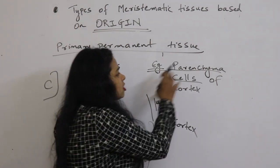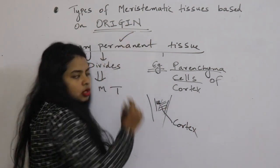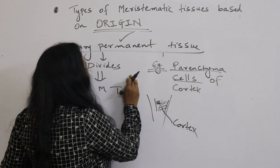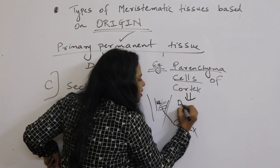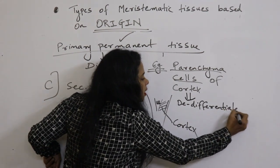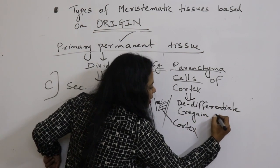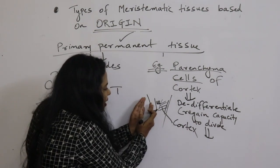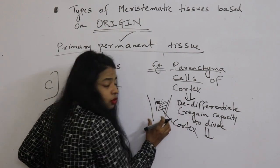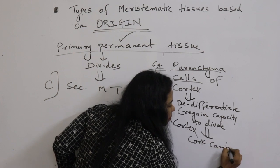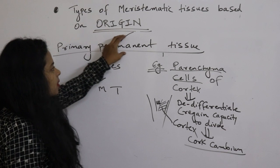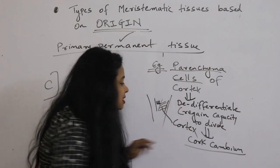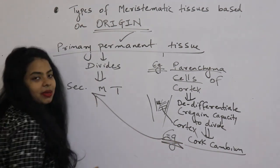These parenchyma cells had stopped dividing because they are permanent tissues. But now they will de-differentiate — meaning they regain the capacity to divide. So primary permanent tissues like parenchyma de-differentiate and regain the capacity to divide. They then form the cork cambium, which increases the girth (width/thickness) of the root. Cork cambium is an example of secondary meristematic tissue.